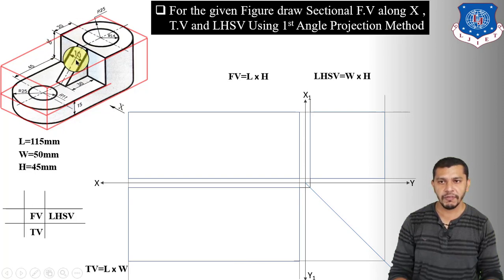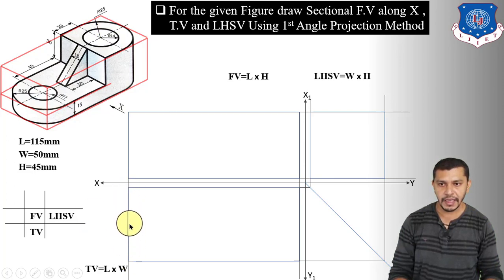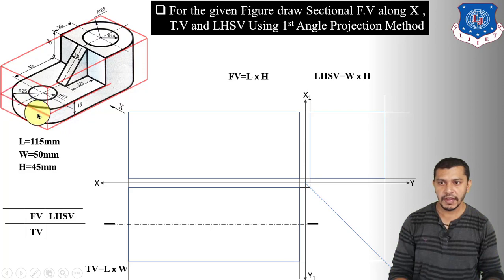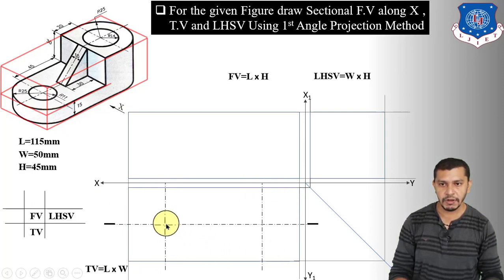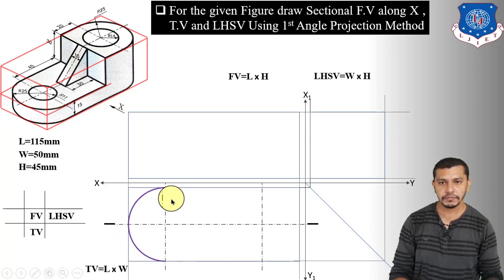Now let us draw the front view, top view, and left-hand side view of the actual object. We start with the top view because the circular arcs are directly plotted there. First, show the axis in the top view from the midpoint of the vertical length to indicate the center of the object. We have to show the centers of the circles 25 mm from each edge. From each center, measure a radius of 25 mm and draw the circles.